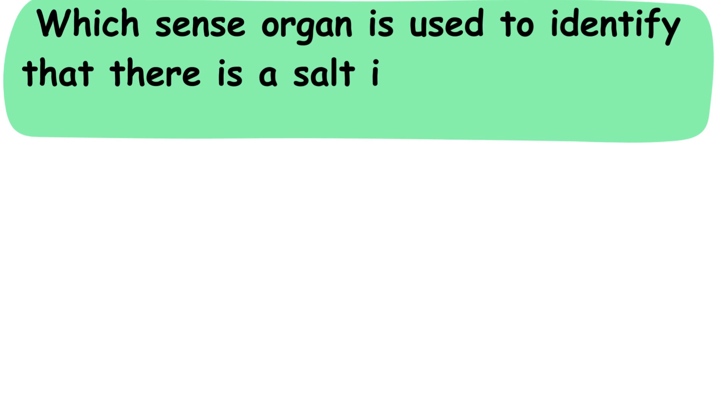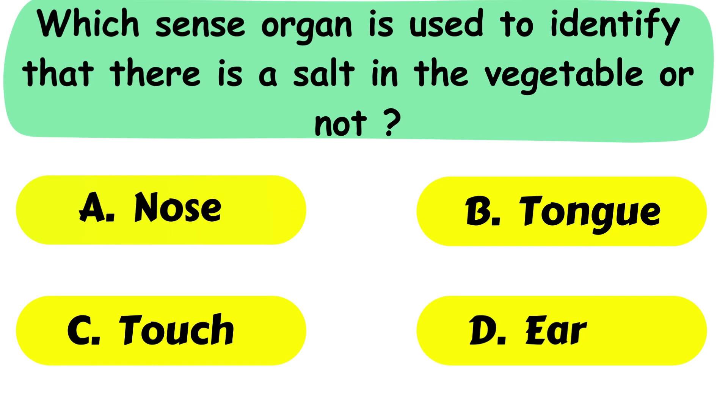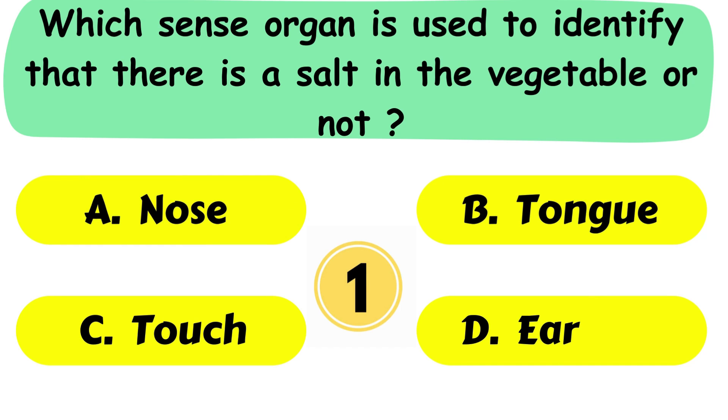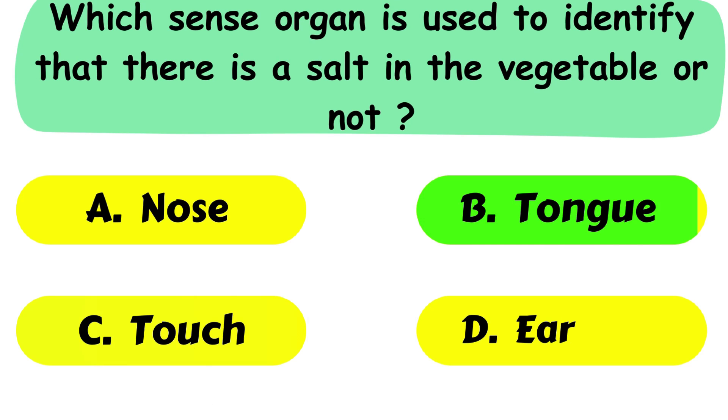Question No. 19. Which sense organ is used to identify that there is salt in the vegetable or not? A. Nose. B. Tongue. C. Touch. D. Ear. The correct answer is option B. Tongue.